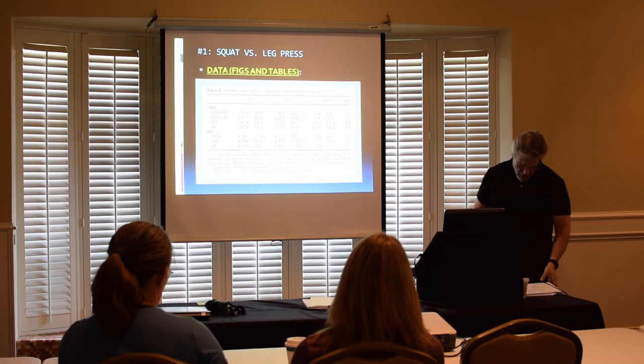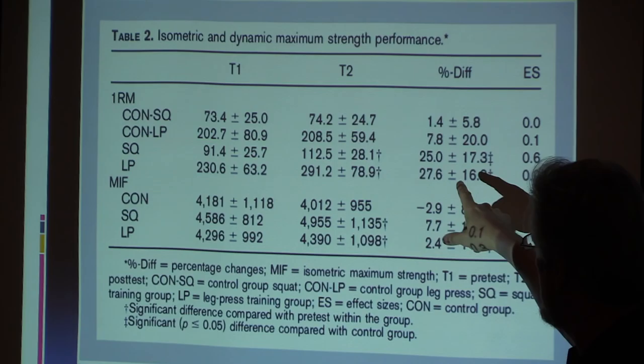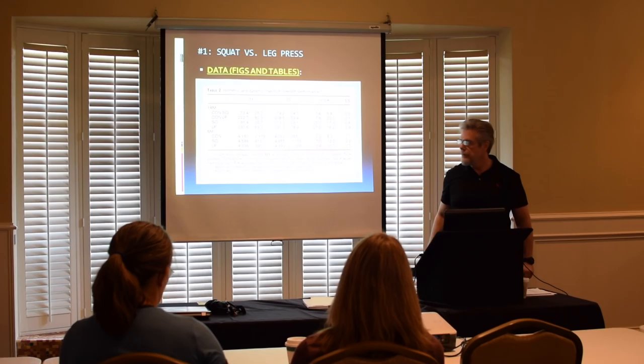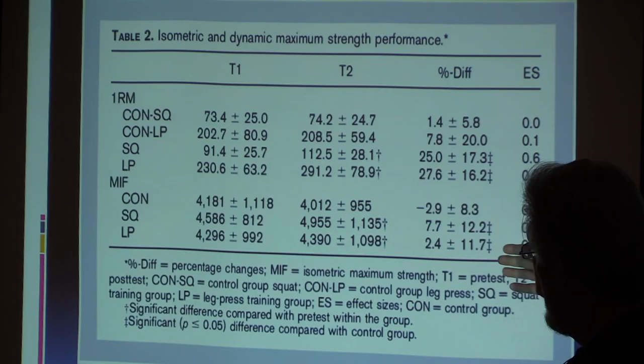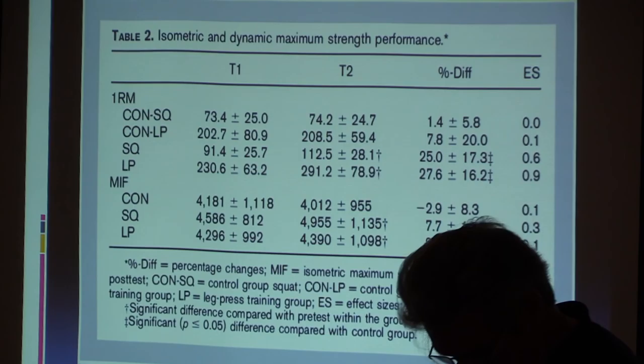So what this data seems to be telling us is that there was little change in the one rep max for the squat control or LP control — no effect based on the effect size. There was a 25% increase in squat strength for the squat group, and a 27.6% increase in strength for the leg press group with pretty good effect sizes. And there wasn't much of an effect for any of the groups with the isometric force testing.